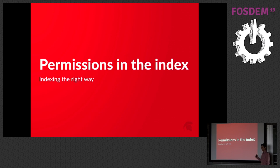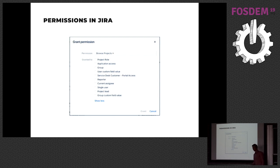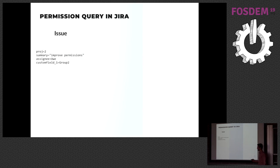Permissions are a big thing in JIRA — it's a very flexible mechanism. You can say everybody can see your issues, or only logged-in users, or only the project lead, the reporter, and the assignee, or only members of a group, or only members of a group set as the value of a custom field on that issue. All of that has to be handled by the index. To understand the change, let's look at a simple model of an issue: it's in project two, has summary 'improve permissions', is assigned to 'Uwe', and has custom field one with value 'group two'.